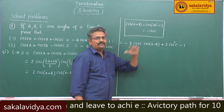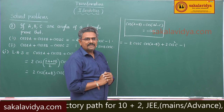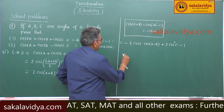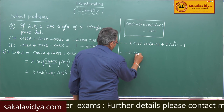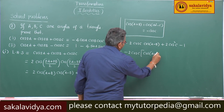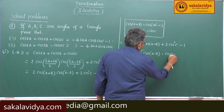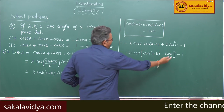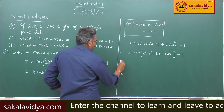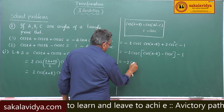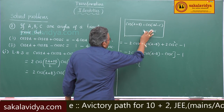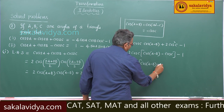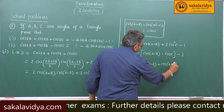Observing the first and second terms, the common factor is 2·cos(c). Taking -2·cos(c) common, we get -2·cos(c)·[cos(a-b) - cos(c)] - 1. Now, replacing -cos(c) with cos(a+b) again, inside the bracket we have cos(a-b) + cos(a+b), and the expression is -2·cos(c)·[cos(a-b) + cos(a+b)] - 1.